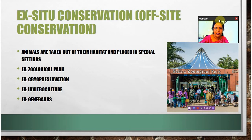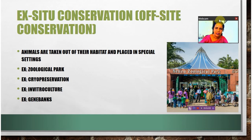Examples of ex situ conservation include zoological parks — we have Nehru Zoological Park in Hyderabad — where there are special settings to protect different types of animals. The second example is cryopreservation, where gametes and embryos are preserved. Gametes are the sex cells responsible for forming seeds or embryos, and they are preserved at minus 196 degrees centigrade for future use.